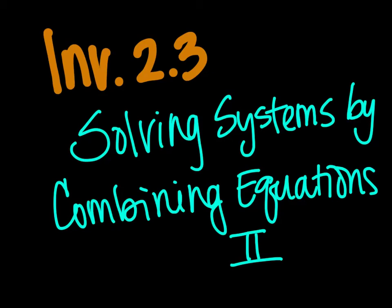Welcome to Investigation 2.3, Solving Systems by Combining Equations. In this investigation, we are going to be looking at essentially combining equations — adding or subtracting equations together to eliminate one of our variables so we can solve for the other one, and then figuring out what the initial variable was that we eliminated in the first place.